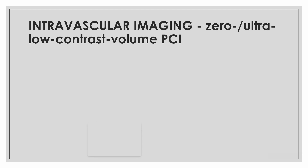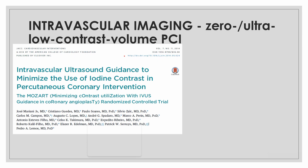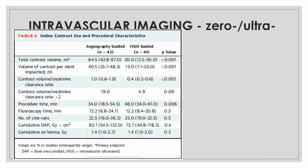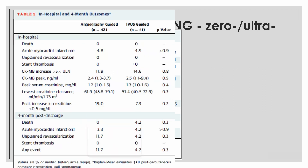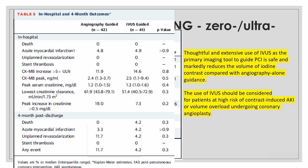The MOZART trial answered whether IVUS guidance can decrease the use of iodinated contrast in PCI. They found that IVUS-guided PCI required lesser total contrast volume compared to angiography-guided PCI, without increased in-hospital complications or complications at 4 months post-discharge. The thoughtful and extensive use of IVUS as a primary imaging tool is safe and markedly reduces contrast volume, and should be considered for patients at high risk of contrast-associated AKI or volume overload.